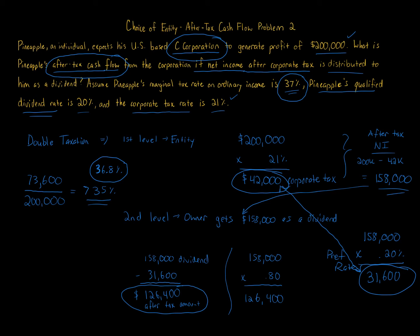One thing to note: the character of items flows through to the owner in a pass-through entity, so if income is subject to the 20% preferential rate it would be taxed at a lot less. There's also the qualified business income deduction that could lower Pineapple's taxes in an S corporation or partnership LLC. Other benefits of an S corporation include utilizing losses. This shows that even a C corporation can be tax-efficient if the corporate rate is low enough — but if you increase the 21% corporate rate, the total burden exceeds 37%.